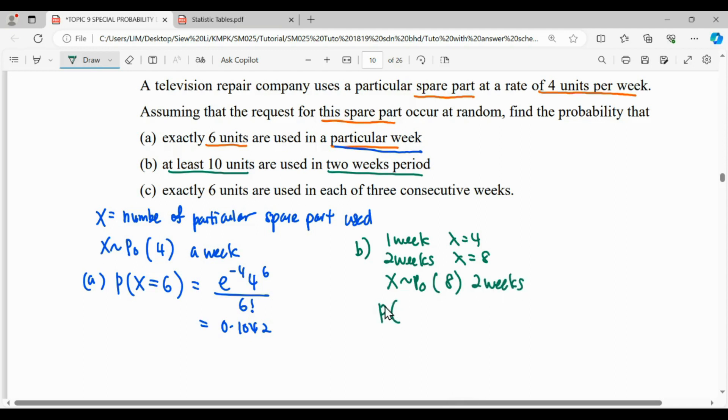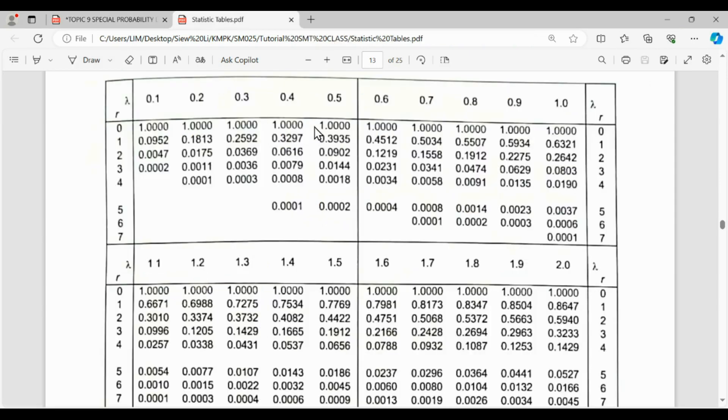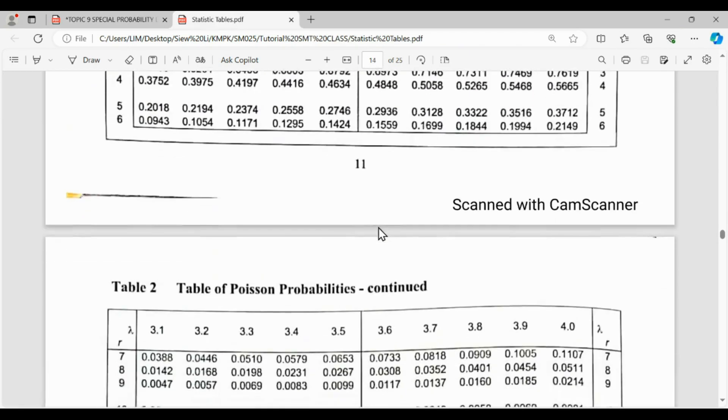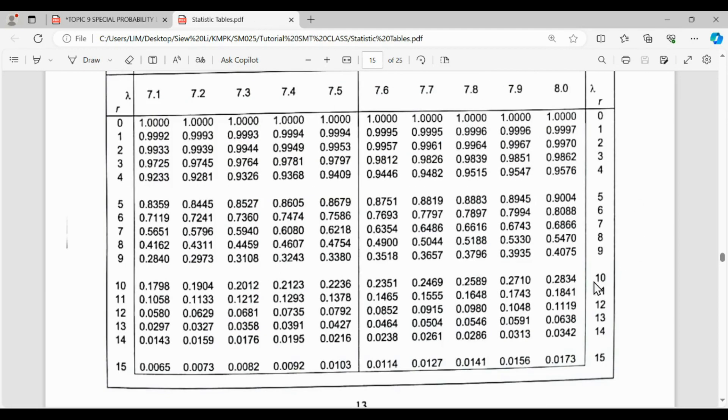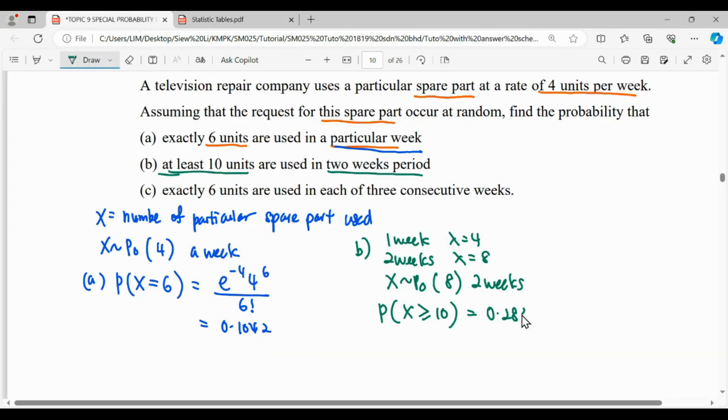Then the probability asked here is at least 10 units. So the number of spare parts at least means greater than or equal to 10. In this case, when we have the symbol greater than or equal, we can read the table directly. So find our lambda of 8, then we read for X greater than or equal to 10, which is 0.2834.